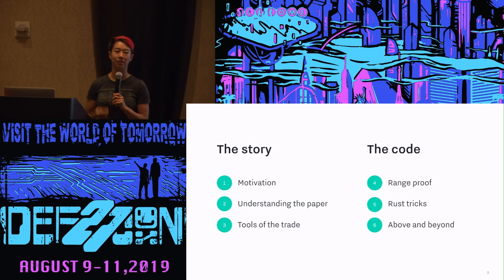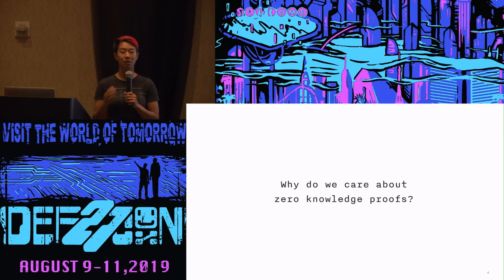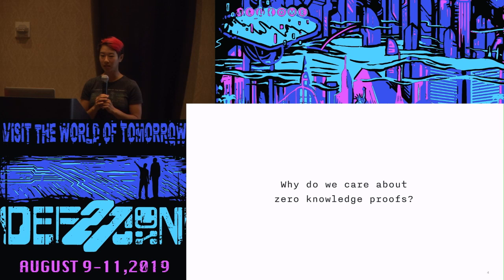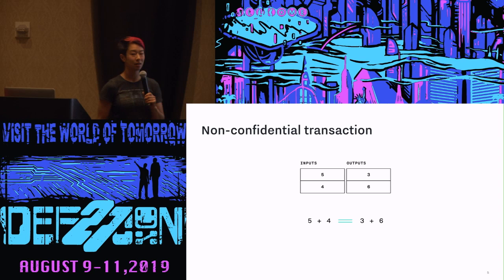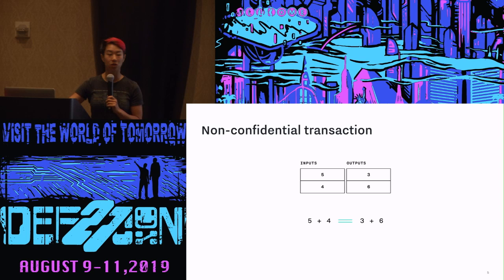Let's talk about motivation. Why do we care about zero-knowledge proofs? Zero-knowledge proofs have actually been around for a really long time, but they've been getting a lot of interest recently because of their application in blockchains for blockchain privacy. In a blockchain transaction, we have some inputs and some outputs. For a financial transaction, you want to make sure that the sum of the inputs balance out with the sum of the outputs. When it's not encrypted, you can do it just by adding and checking. But what if you want to encrypt or hide what your inputs and outputs are?